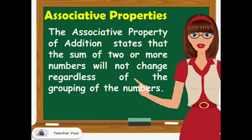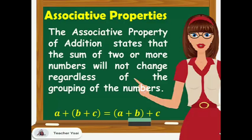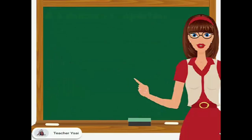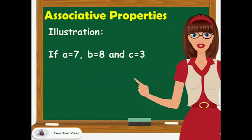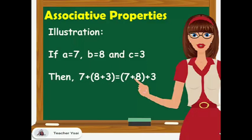The associative property of addition states that the sum of 2 or more numbers will not change regardless of the grouping of the numbers. So, a plus the sum of b and c is equal to a plus b plus c. For example, if a equals 7, b equals 8, and c equals 3, then 7 plus the quantity 8 plus 3 equals the quantity 7 plus 8 plus 3.